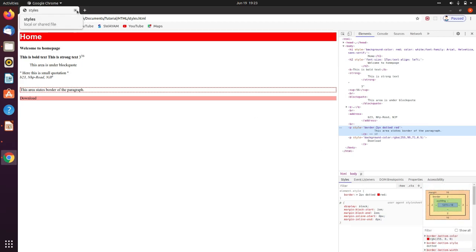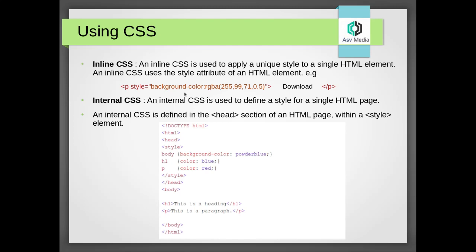Now let's move to using CSS. CSS can be used in 3 types: inline CSS, internal CSS, and external CSS. Inline CSS is used to apply a unique style to a single HTML element — like p style background-color RGBA — we have already done this in the previous video, so it is quite easy to understand. Internal CSS is used to define a style for a single HTML page. Any style you have defined within that HTML page will be accessible within that page only.